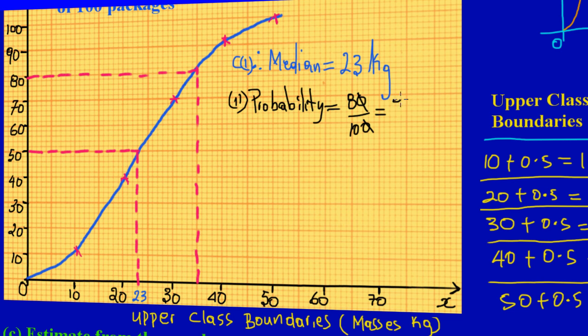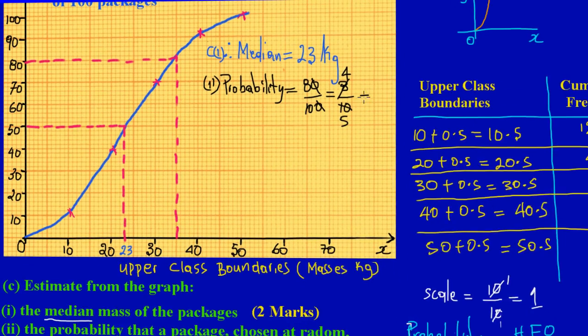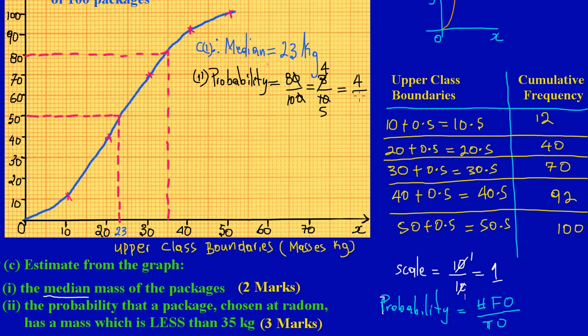We know that 10 into 80 goes 8 times, and 10 into 100 goes 10 times. So we're left with 8 over 10, which also can be simplified. 2 into 8 goes 4, and 2 into 10 goes 5. So my probability when it is simplified is basically four-fifths. That's your answer.